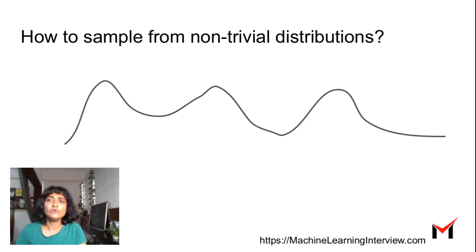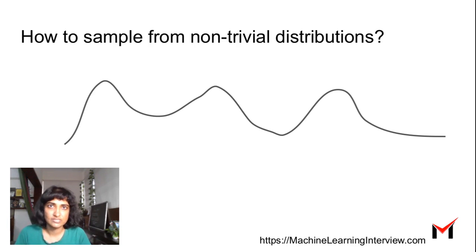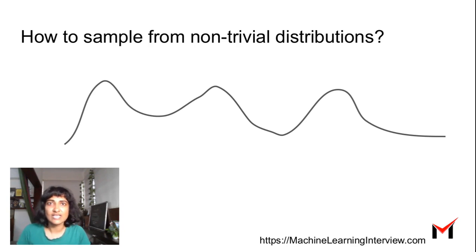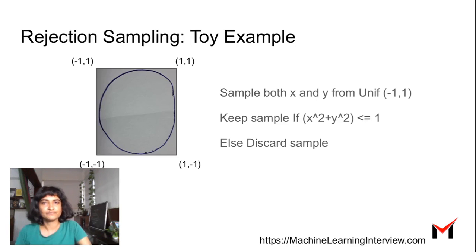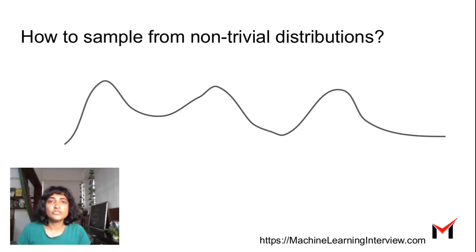Why do we need rejection sampling? Often when we want to sample, the data might come from non-trivial distributions. If the distribution from which the data is coming is not easy to sample from — for instance, a Gaussian or uniform distribution is easy to sample from — but how do you sample from some complicated PDF? That's when rejection sampling comes in. Rejection sampling is useful when you have distributions that are hard to sample from but possible to evaluate.